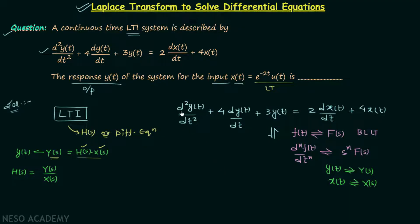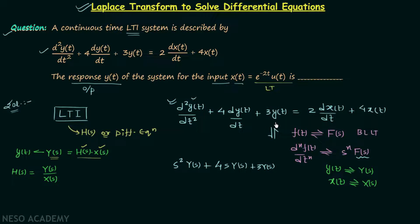Applying the property: the 2 times second derivative of y(t) term has n equal to 2, so its Laplace transform is 2 times s squared times Y(s). Similarly, 4 times the first derivative of y(t) gives 4·s·Y(s). For 3·y(t), there is no derivative, so we directly write 3·Y(s). On the right-hand side, 2 times the derivative of x(t) gives 2·s·X(s).